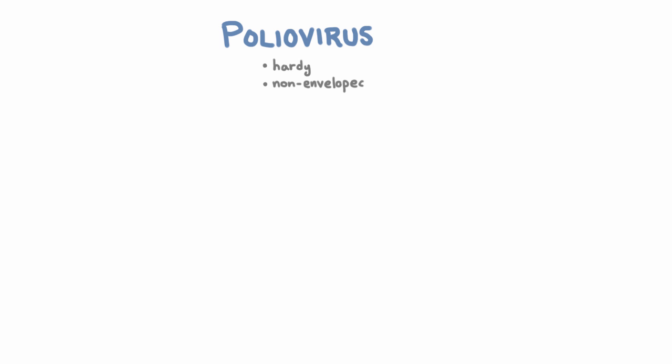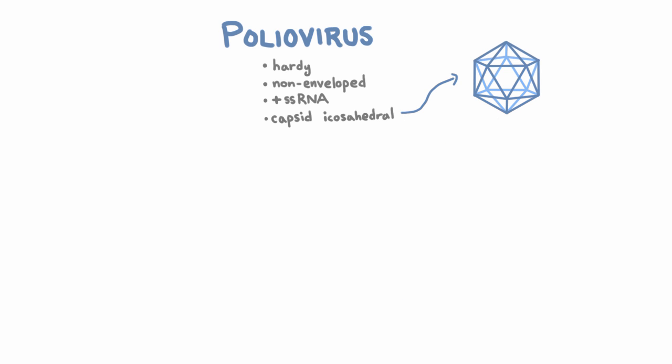The first enteric virus we're going to talk about is the enterovirus poliovirus. Polio is a hardy, meaning it can survive in many different environments. It's a non-enveloped, positive, single-stranded RNA virus. It has a capsid with icosahedral symmetry, and it's almost entirely eradicated thanks to vaccines, but it's still important to learn about.